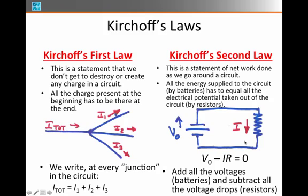If there's more than one resistor, there can be more than one drop, and if there's more than one battery, there can be more than one voltage increase. But no matter what, we're going to add up all the voltage inputs, subtract off all the voltage outputs, and these have to be equal — so the sum of the inputs minus all the outputs equals zero.